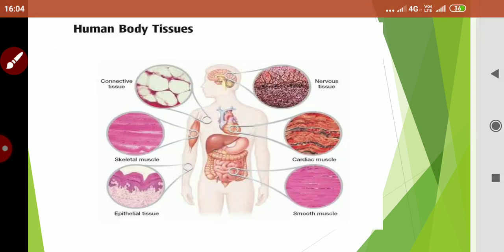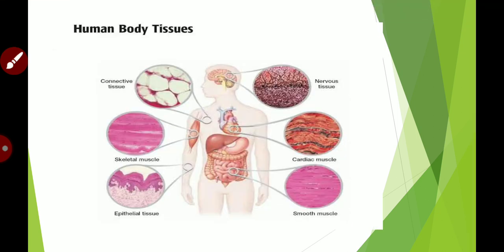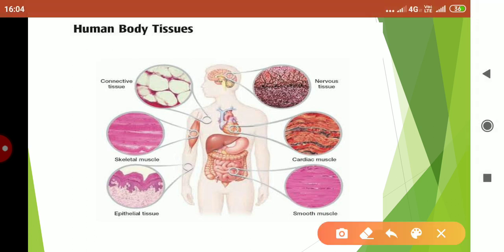Now children, these are the human body tissues. So you have studied till now that a single cell is able to perform all the functions. But in multicellular organisms, the functions are divided. Means few cells will form the epithelial layer and few cells will form the skeletal muscle. Few will form the connective tissue. Others will form the nervous tissue. Then a few of the cells will form the cardiac muscle, smooth muscle and variety of tissues are present.